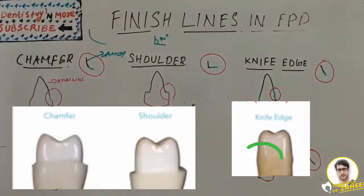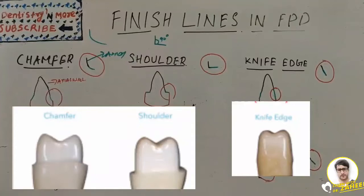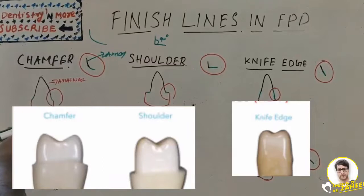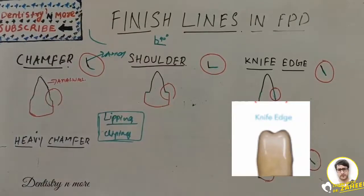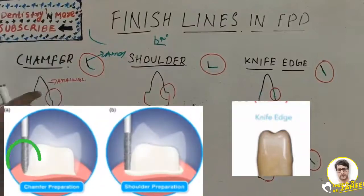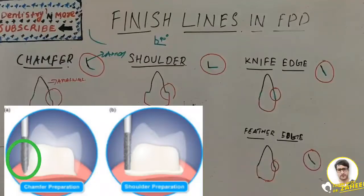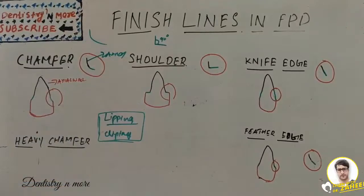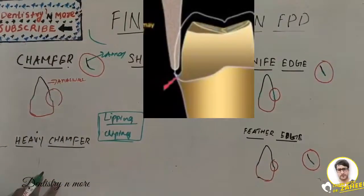Chamfer can be produced using a torpedo diamond point and is commonly used in cast metal crowns or the metal-only portion of PFM crowns. It is very distinct and easily identifiable. It has the least stress. Only half of the diamond bur tip is placed at the margin during preparation. Chamfer has the least stress and a good success rate.